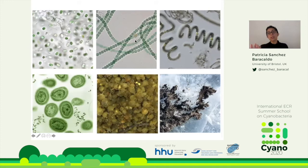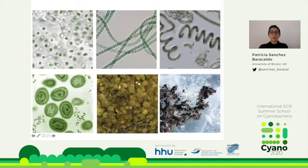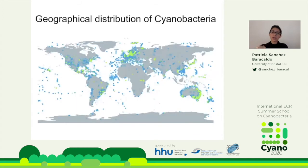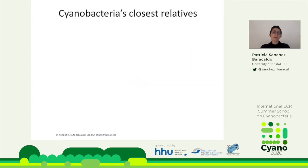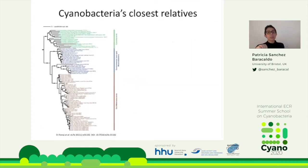We have filamentous forms and unicellular ones. Something quite unique to bacterial groups is that cyanobacteria are able to produce differentiated cells — in the Nostocales, these are called heterocysts, specialized cells where nitrogen fixation occurs. This is quite unique for bacteria. They're not only diverse morphologically but also ecologically diverse — found in glaciers, drylands, and all over the world in all sorts of different habitats.